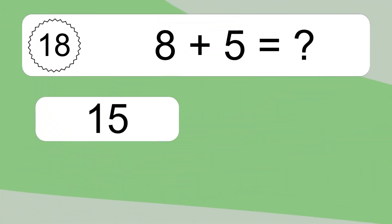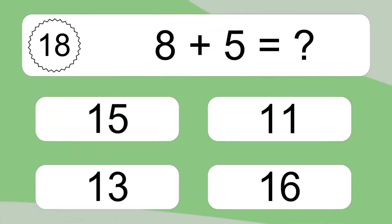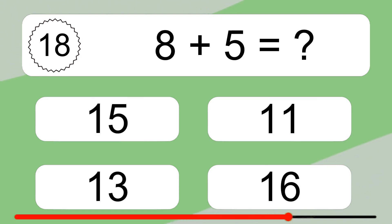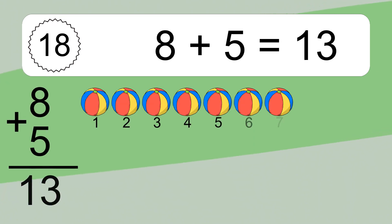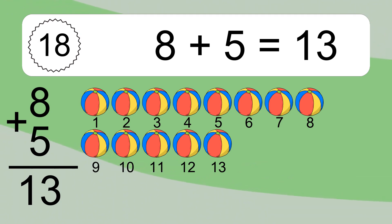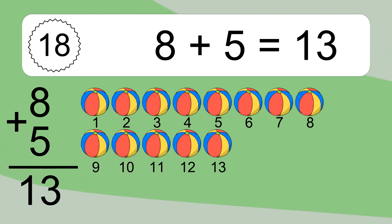8 plus 5 equals what? 8 plus 5 equals 13. Let's count it: 1, 2, 3, 4, 5, 6, 7, 8, 9, 10, 11, 12, 13.